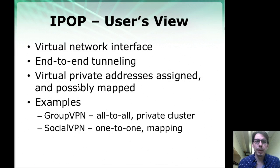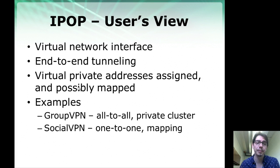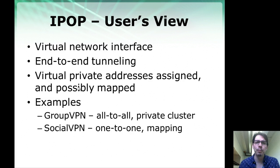IPOP begins with a network interface that allows a computer to connect to the virtual network. It then takes packets out of this network interface and creates peer-to-peer tunnels connecting to another computer on the other side of the internet. It allows this virtual network interface to have virtual private addresses assigned, and also implements the possibility of mapping IP addresses in the process of moving from one endpoint to the next.